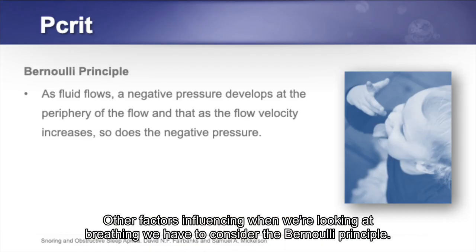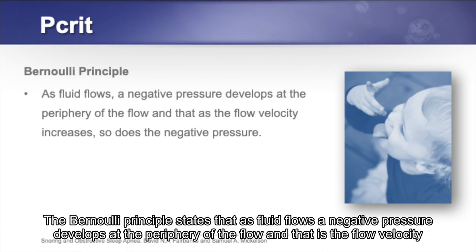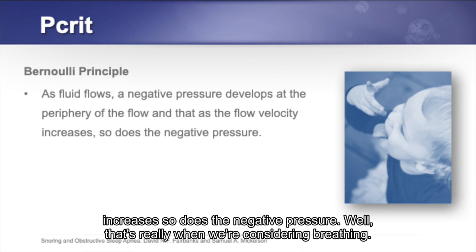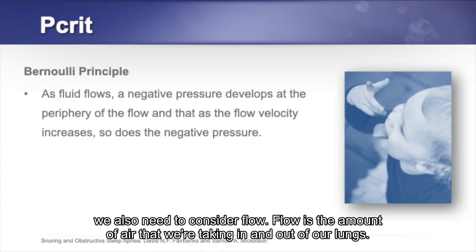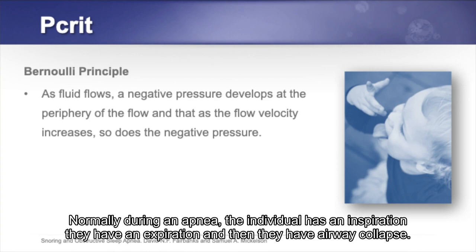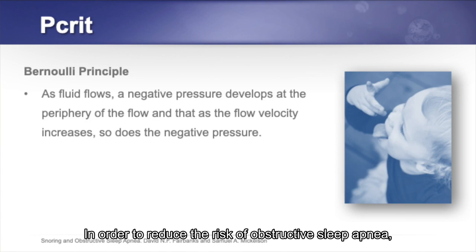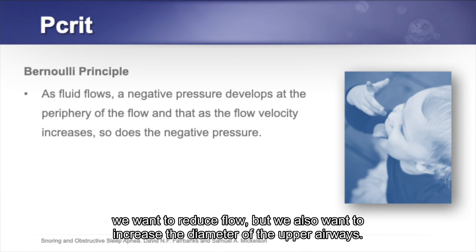When considering breathing, we must consider the Bernoulli principle, which states that as fluid flows, negative pressure develops at the periphery of the flow, and as flow velocity increases so does the negative pressure. For the upper airway, we need to consider both the diameter and the flow — the amount of air taken in and out of the lungs. Normally during an apnea, the individual inspires, expires, and then has airway collapse. To reduce OSA risk, we want to reduce flow and increase the diameter of the upper airways.